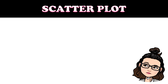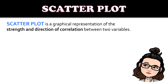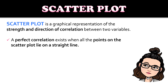Next we will be discussing the scatterplot. What is a scatterplot? It is a graphical representation of the strength and direction of the correlation between two variables. A perfect correlation exists when all the points on a scatterplot lie on a straight line, whether it's negative or positive correlation — as long as it lies on a straight line, that's a perfect correlation.